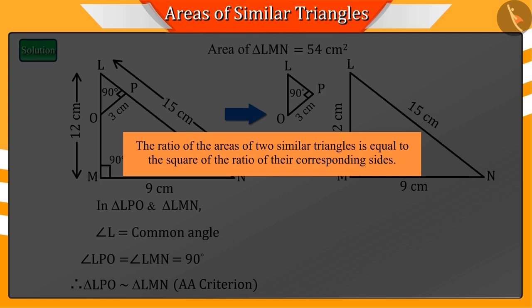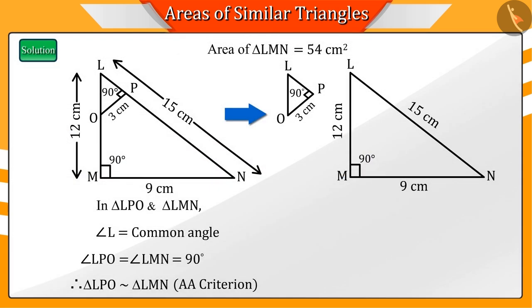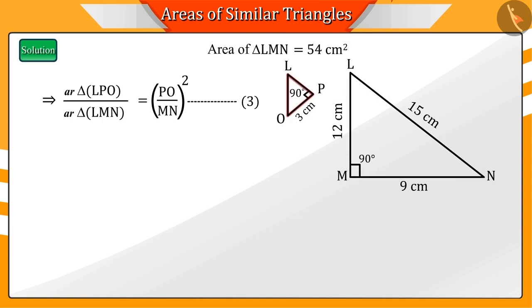We are sure you remember that the ratio of the areas of two similar triangles is equal to the square of the ratio of their corresponding sides. Hence, from the similar triangles LPO and LMN, we get equation 3.